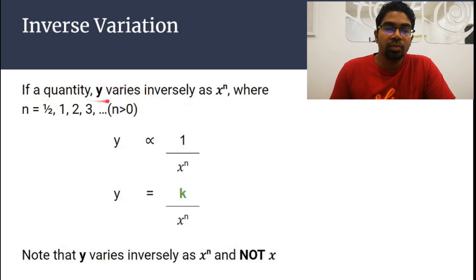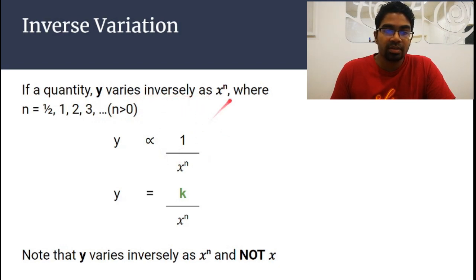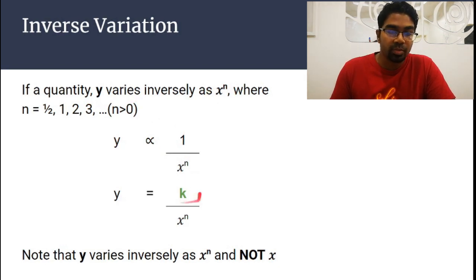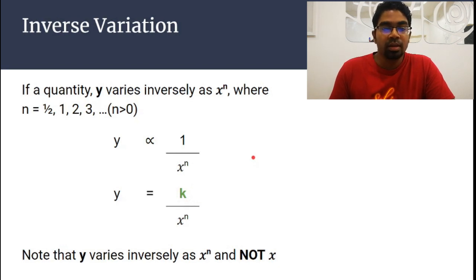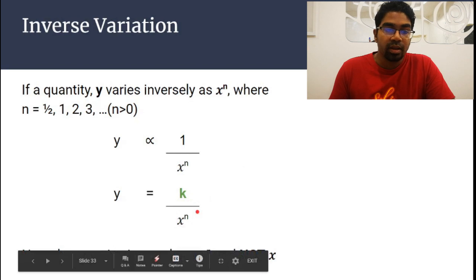If a quantity y varies inversely as x to the power of n — where n can be a fraction or whole number, as long as n is greater than 0 — this is how we write it: y is proportional to 1 over x to the power of n. When converting to an equation, we add the proportionality constant k, so y equals k over x to the power of n. It's the same concept as before, but with x to the power of n instead of x.